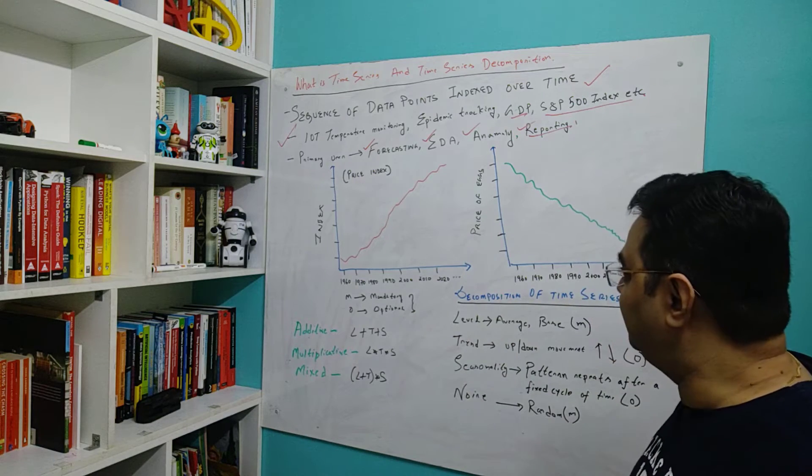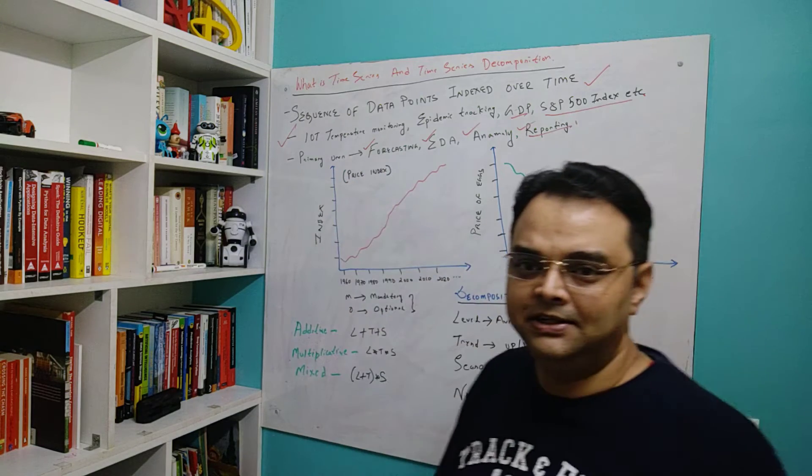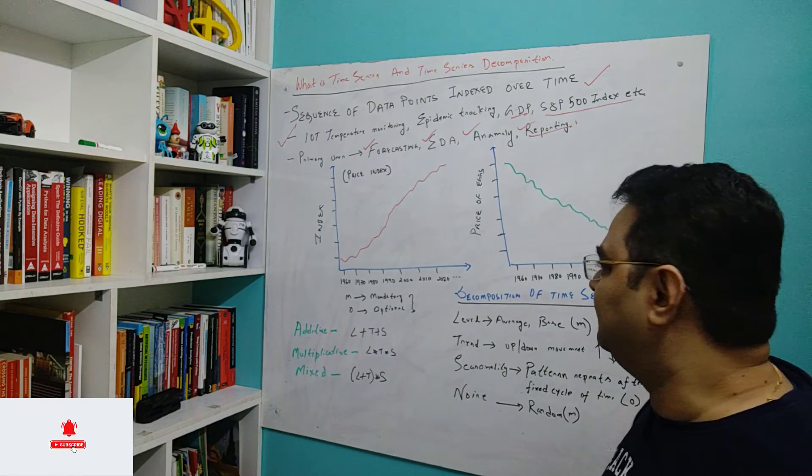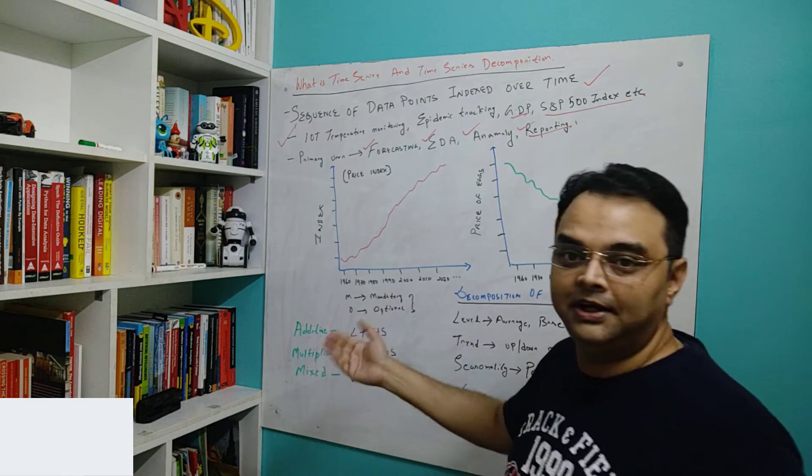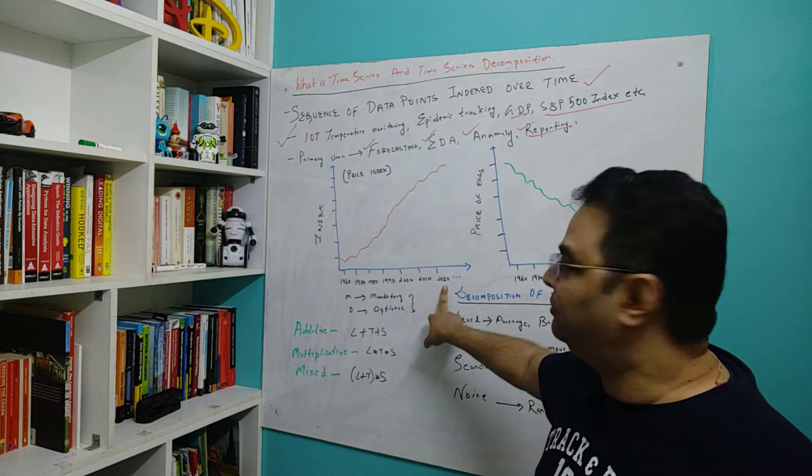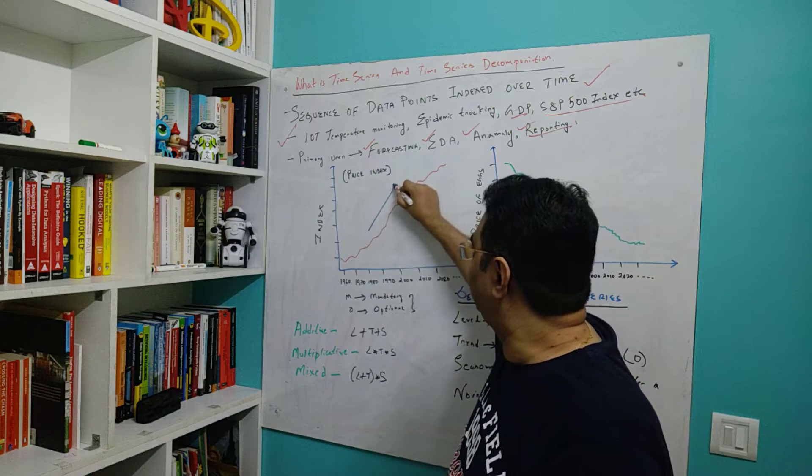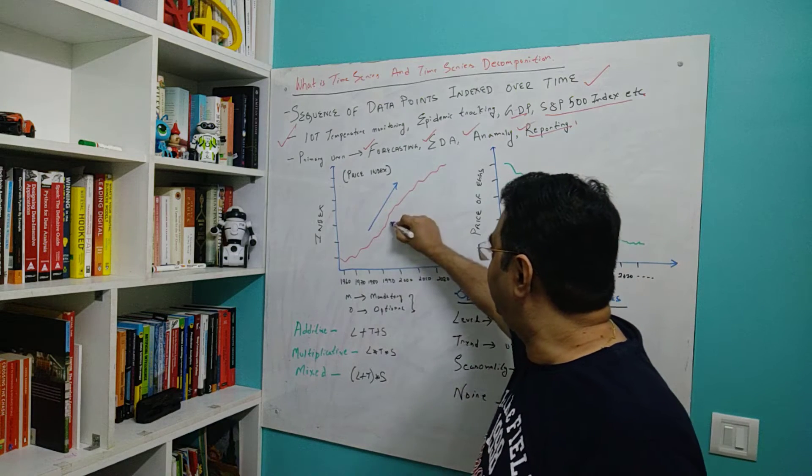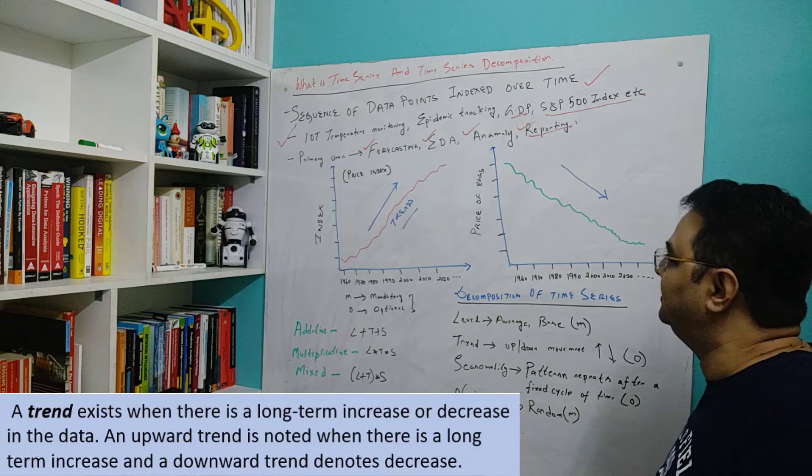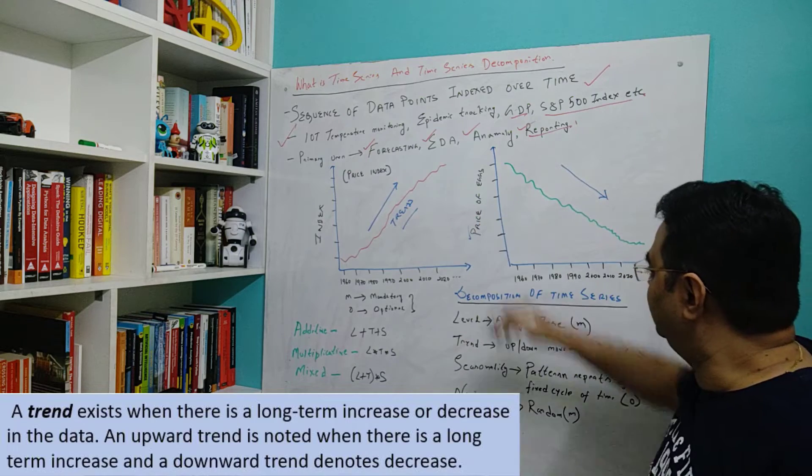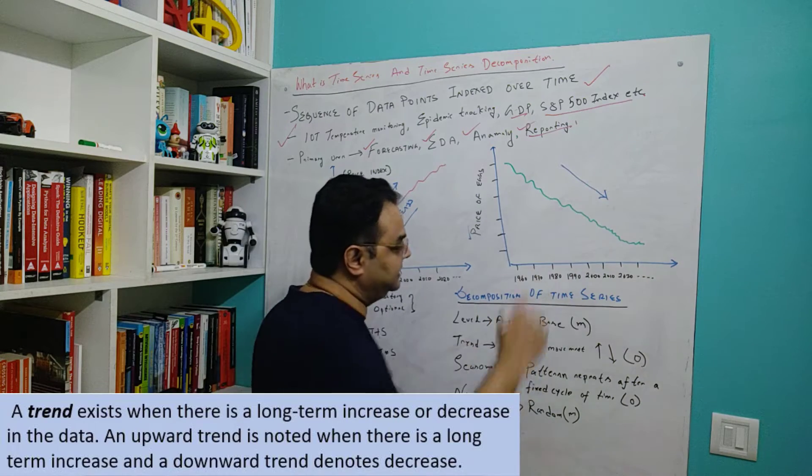Now here is one example which you can see visually. This is the indexing over time, this is a price index - let's say this is a US price index for one of the markets. This is the index value and how it has changed over time, for every decade, every 10 years starting from 1960 to 2020. You can see that there is an upward rise, and such kind of upward rise or downward rise is called a trend. Similarly, you can also have a downward trend. This time series talks about the price of eggs every 10 years or every decade, and the price of eggs is decreasing, so there is again a decreasing trend.